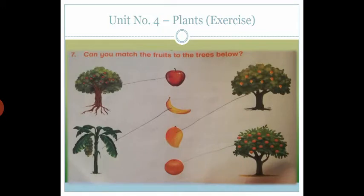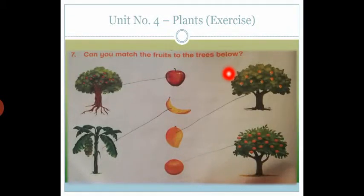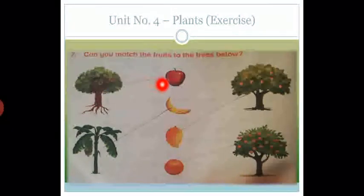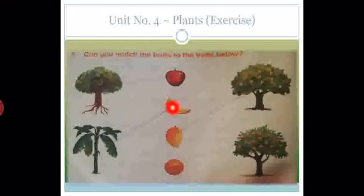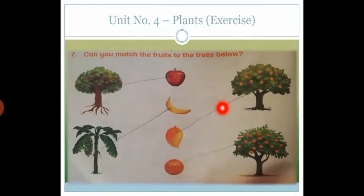Now look at question number 7: can you match the fruits to the trees below? You have to match the fruits to the trees below. You have to match the correct tree with the fruit. This is an apple tree, so you have to match with the apple. This is a banana tree, so you have to match with the banana. This is a mango tree, so you have to match with mango. And this is an orange tree, so you have to match with orange.